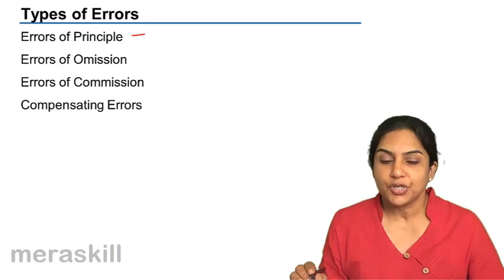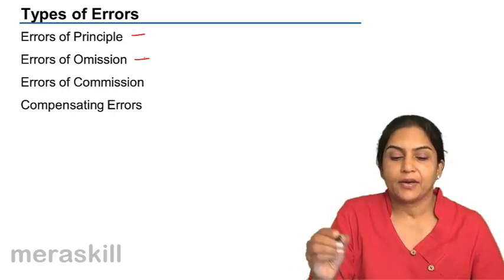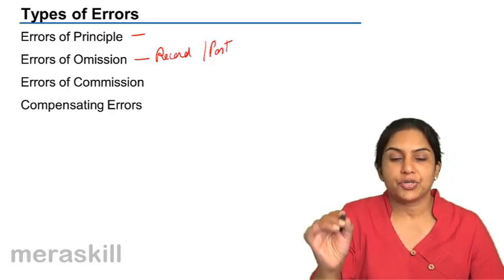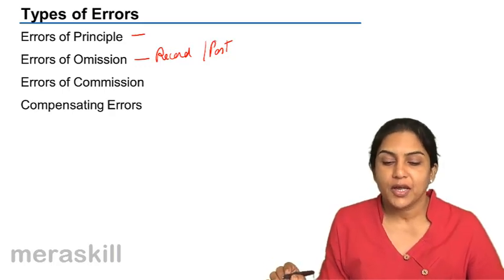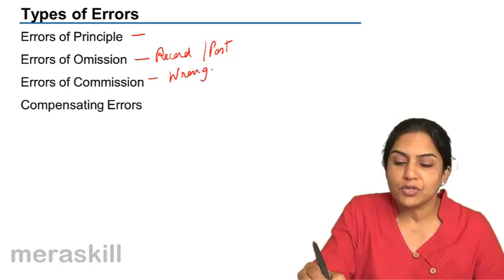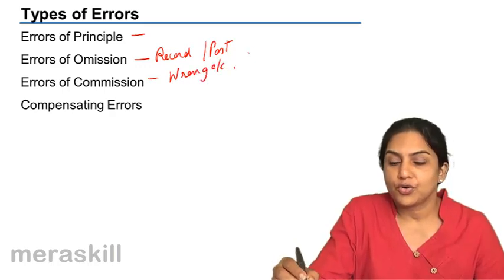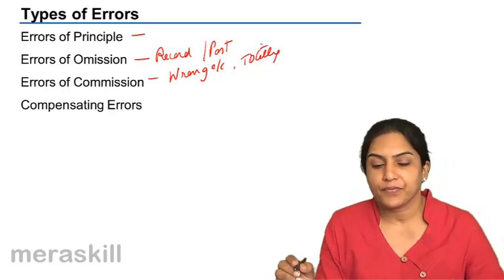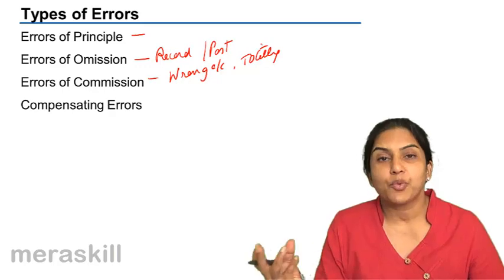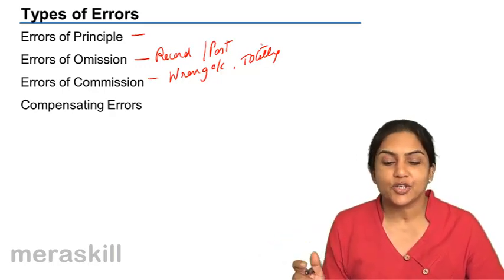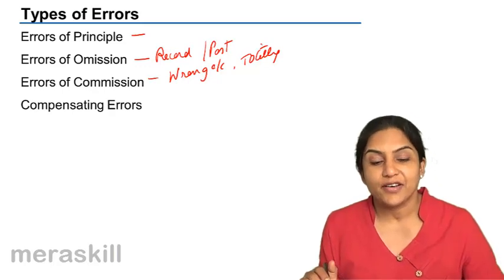Errors of omission occur when we omit to either record a transaction or post a transaction — that is an error of omission. Errors of commission could be posting to a wrong account, wrong totalling, or taking a wrong amount while posting. Other errors that you commit are errors of commission.